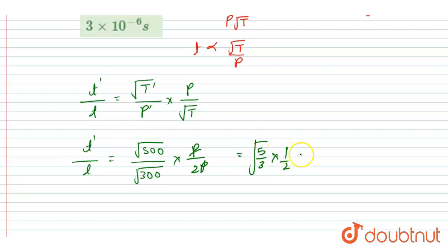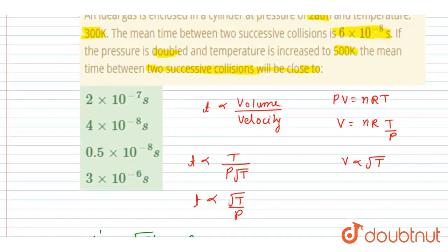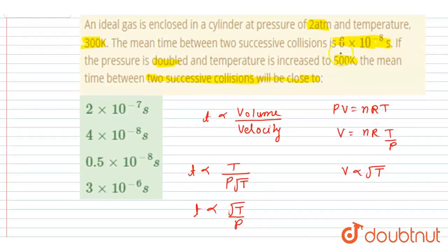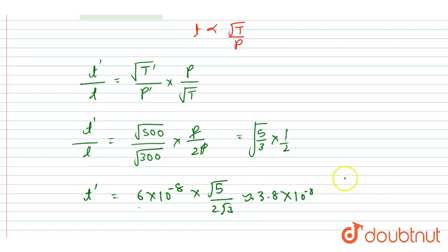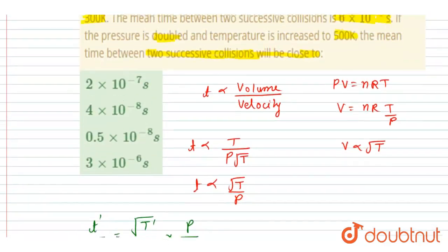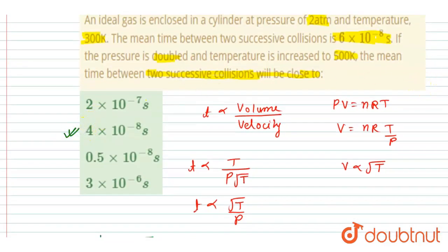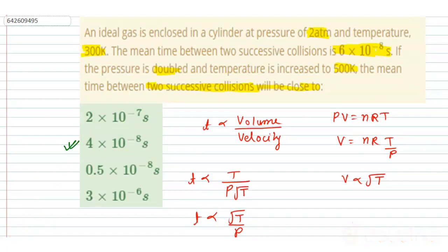The initial mean time between two successive collisions was 6 into 10 to the power minus 8. So the new mean time T dash equals 6 into 10 to the power minus 8 multiplied by under root 5 over 2 root 3, which is nearly equal to 3.8 into 10 to the power minus 8, approximately 4 into 10 to the power minus 8 seconds. So the correct answer is 4 into 10 to the power minus 8 seconds.